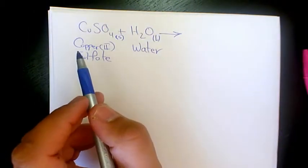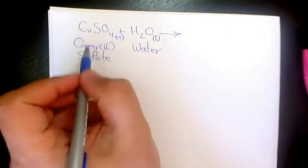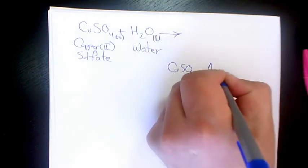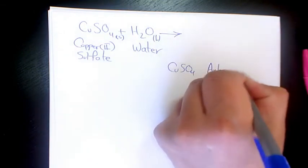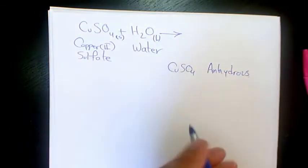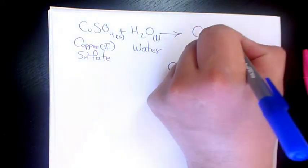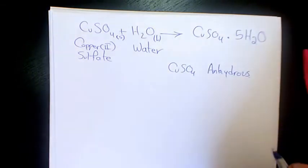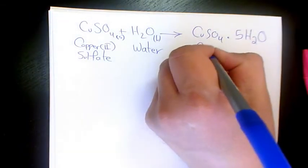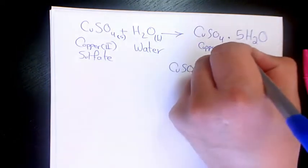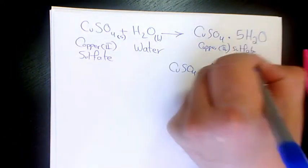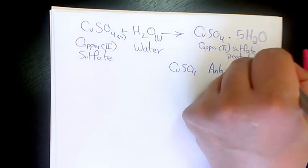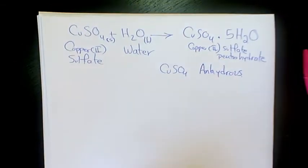When they react, the copper sulfate is going to be copper sulfate hydrous, which means it is going to be CuSO4·5H2O, and that one is called copper 2 sulfate pentahydrate. So this one is in crystalline form.